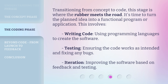Transitioning from Concept to Code, this stage is where the rubber meets the road. It's time to turn the planned idea into a functional program or application. This involves writing code using programming languages to create the software, testing to ensure the code works as intended and fixing any bugs, and iteration — improving the software based on feedback and testing.